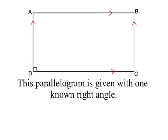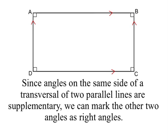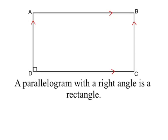Now we're given a parallelogram with just one known right angle, but we can prove it's a rectangle because the opposite angles of a parallelogram are congruent, so angle B is also a right angle. Then, since angles on the same side of a transversal of two parallel lines are supplementary, we can mark the other two angles as right angles — the supplement of a right angle is another right angle. So if we're given a parallelogram with one right angle, we know that all four angles are right, and it's a rectangle.